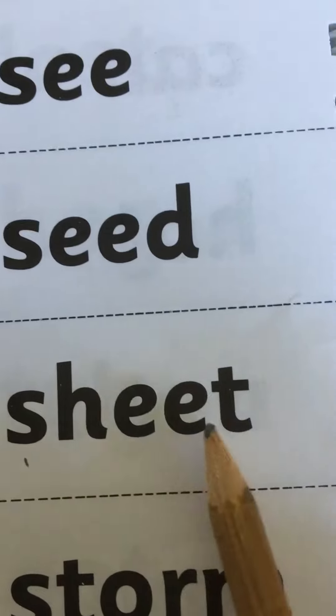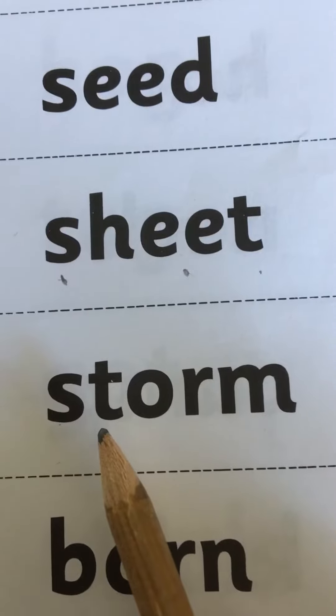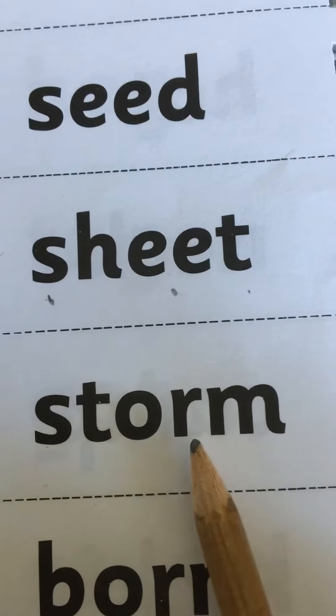Five letters but only one, two, three sounds. No, four sounds. S-t-or-m, storm. The 'or'. B-or-n, born.